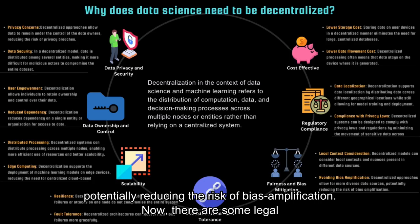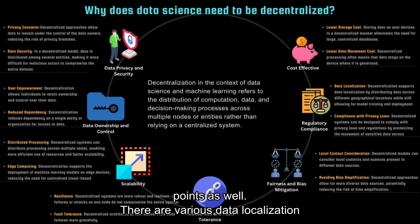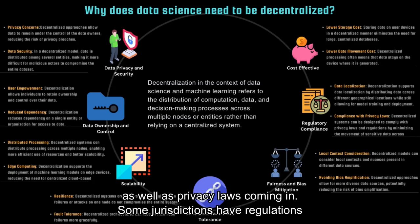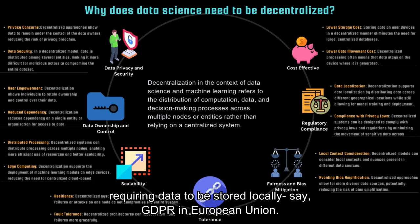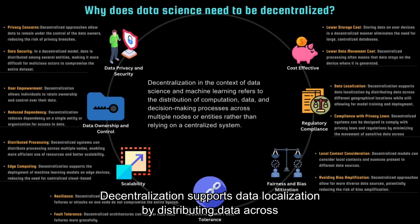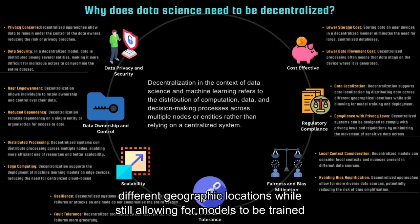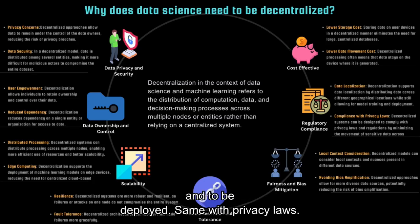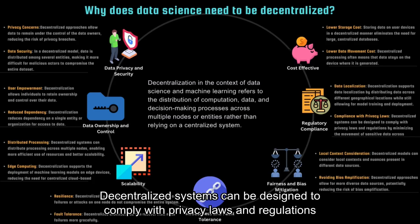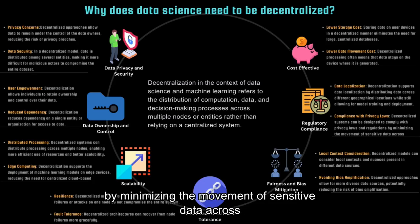There are also legal points. There are various data localization as well as privacy laws coming in. Some jurisdictions have regulations requiring data to be stored locally — for example, GDPR in the European Union. Decentralization supports data localization by distributing data across different geographic locations while still allowing for models to be trained and deployed. Similarly, decentralized systems can be designed to comply with privacy laws and regulations by minimizing the movement of sensitive data across borders.